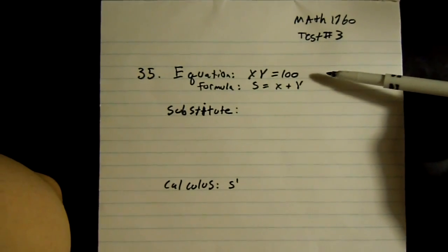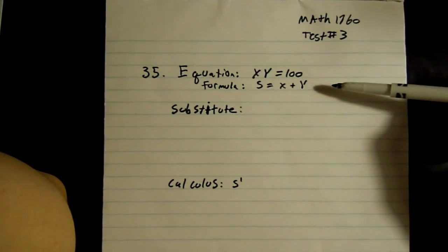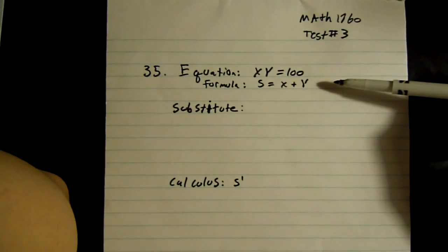So first you find the equation. The equation for this is going to be x times y equals 100, and the formula is going to be the sum equals x plus y.